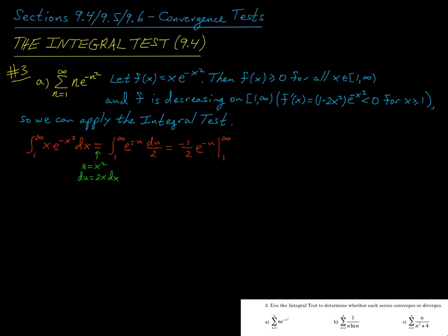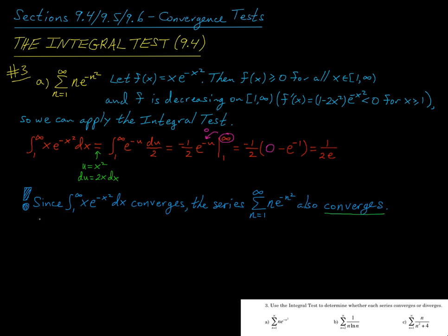For x dx, that's du divided by 2. So now integrating e to the negative u gives us negative e to the negative u, and the 1 half comes out front. Evaluating at 1 and at infinity — to evaluate at infinity we take the limit as u approaches infinity, and this exponential term approaches 0. Simplifying, we get the value 1 over 2e for this integral. What matters is whether the integral converges or diverges — since we get a finite value, the improper integral converges, and so by the integral test, the series of n times e to the negative n squared also converges.